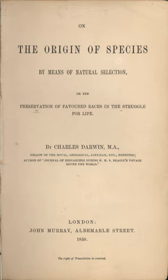Chapter 10 examines whether patterns in the fossil record are better explained by common descent and branching evolution through natural selection than by the individual creation of fixed species. Darwin expected species to change slowly, but not at the same rate; some organisms such as Lingula were unchanged since the earliest fossils. The pace of natural selection would depend on variability and change in the environment. He cited Richard Owen's findings that the earliest members of a class were a few simple and generalized species with characteristics intermediate between modern forms, followed by increasingly diverse and specialized forms matching the branching of common descent from an ancestor. Patterns of extinction matched his theory, with related groups of species having a continued existence until extinction, then not reappearing.